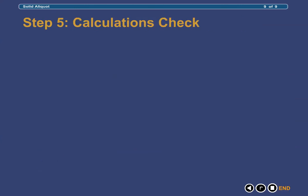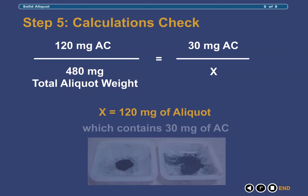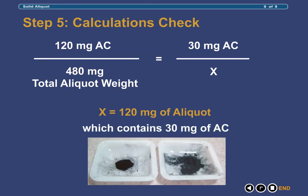At this point, we should double check our calculations. This is easily done by setting up the following equation. If we know that there is 120 mg of activated charcoal in 480 mg of total aliquot, then 30 mg of activated charcoal will reside in what weight of aliquot? Solving for X, we see that 120 mg of a properly prepared aliquot should indeed contain the 30 mg of activated charcoal that is needed for our dose.